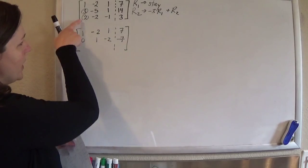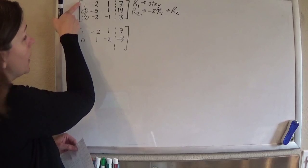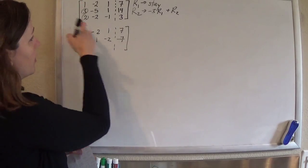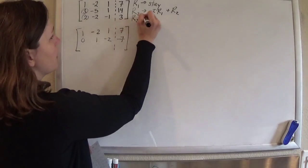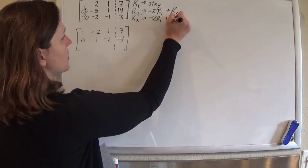So now I need to make this a 0. So again, I'm going to use row 1 to do it. So I'm going to do negative 2 times row 1 plus row 3. So row 3 is going to become negative 2 times row 1 plus row 3.